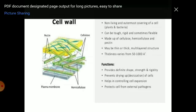Cell wall is found in plant cells and bacteria. It is a rigid, non-living, outermost covering. It can be tough, rigid, or sometimes flexible. It is made up of cellulose, hemicellulose, and pectin. It may be thin or thick and has a multi-layered structure; thickness varies from 50 to 1000 Angstroms. Functions of the cell wall: it provides definite shape, strength, and rigidity; prevents drying up and desiccation; helps control cell expansion; and protects the cell from external pathogens.